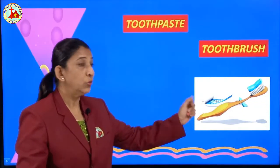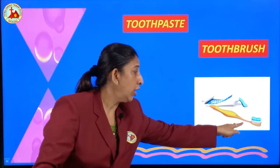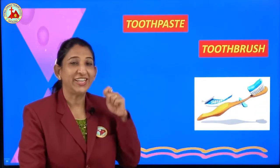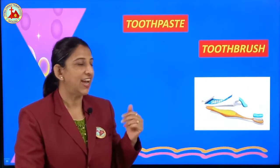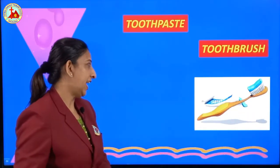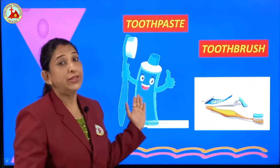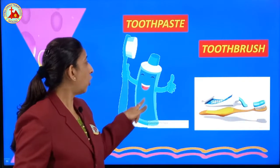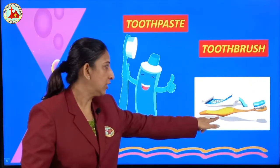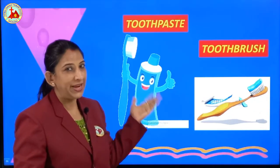Next is toothbrush. Children, this is called a toothbrush. We brush our teeth in the morning and at night with this toothbrush. We use the toothbrush with paste — this is called toothpaste.